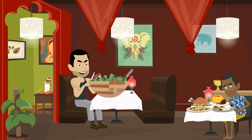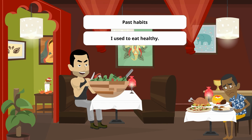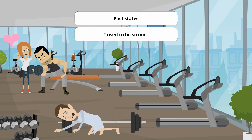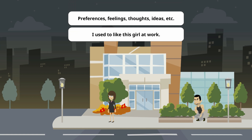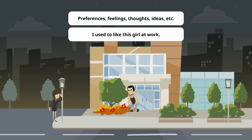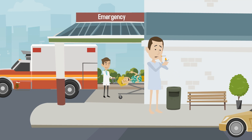There are also other specific uses of 'used to' and 'didn't used to.' We use the negative 'didn't used to' to talk about things that are true now but weren't true before.